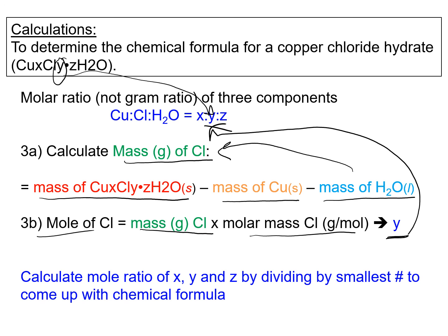Now with moles of copper, chloride, and water determined — your X, Y, and Z — you can get the actual chemical formula of the compound. Divide all three values by the smallest of those numbers, and the resulting ratios give you your chemical formula.